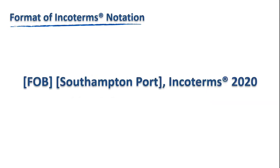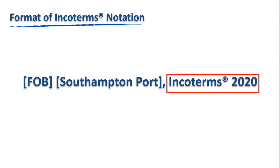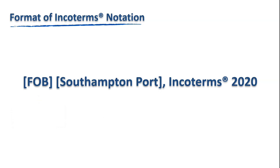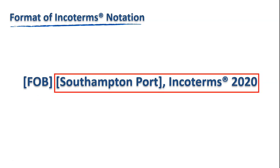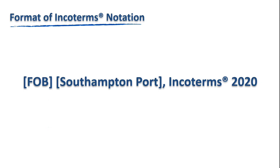Each incoterm is expressed as the chosen incoterms rule, named port, place or point, followed by Incoterms 2020. Each incoterm is a three-letter word. Not only does the chosen incoterm rule bear significance, but the name of the place and the year of the incoterm rule are also very important. Leaving the year out could cause problems that may be difficult to resolve in case of a dispute, as determining which version of the rule is to be followed becomes ambiguous.